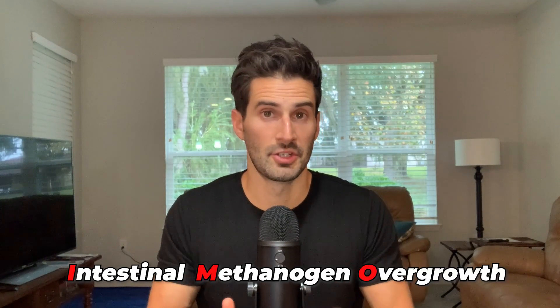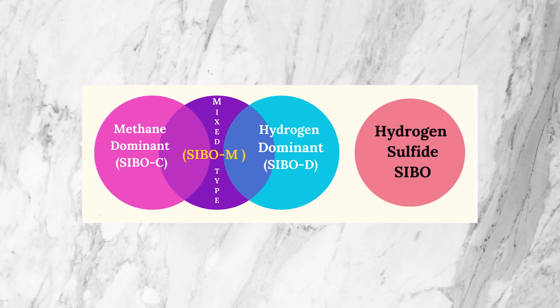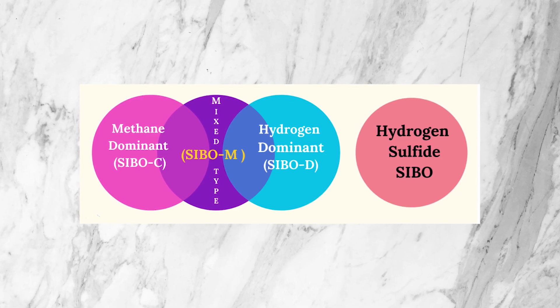Intestinal methanogen overgrowth is a relatively new term that began to be used in the past several years. It used to be called methane dominant SIBO, and to be fair, this label, as well as methane SIBO, are still pretty frequently used. I've also used the term SIBO as an umbrella term that includes multiple types of overgrowths, including IMO. I do this just because it's simpler and less confusing.